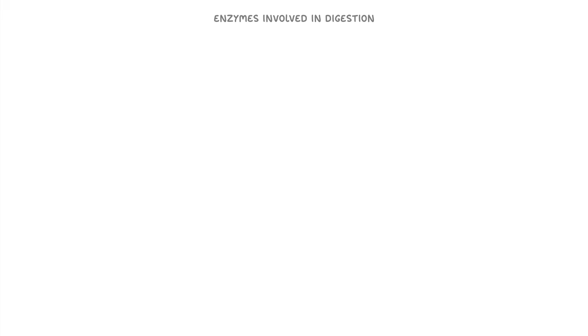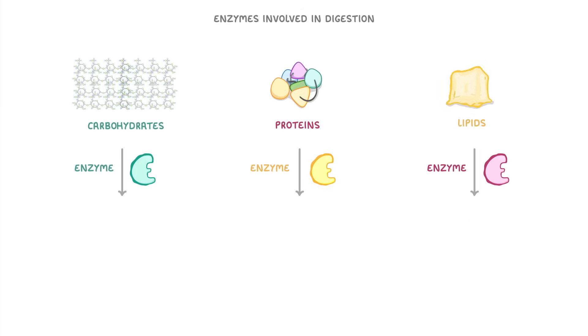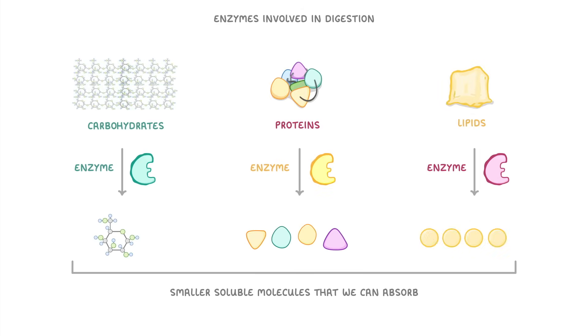In this video, we're going to look at how the different biological molecules that we eat, like carbohydrates, proteins, and lipids, are broken down by enzymes into smaller soluble molecules that we can absorb.